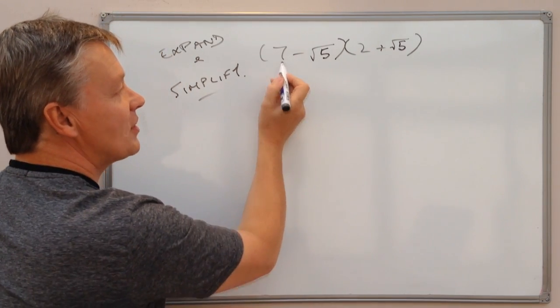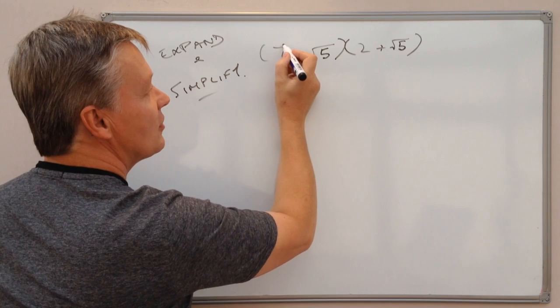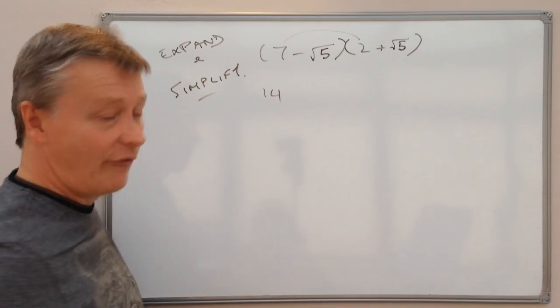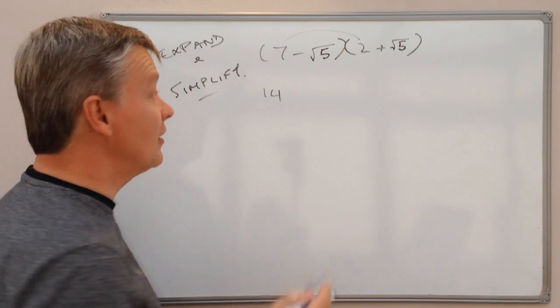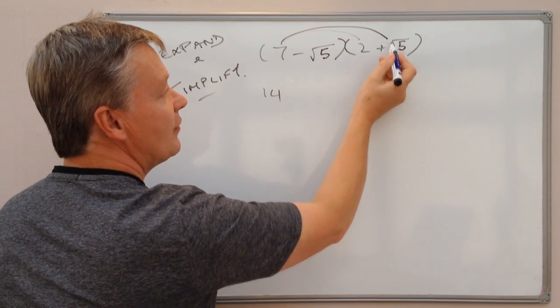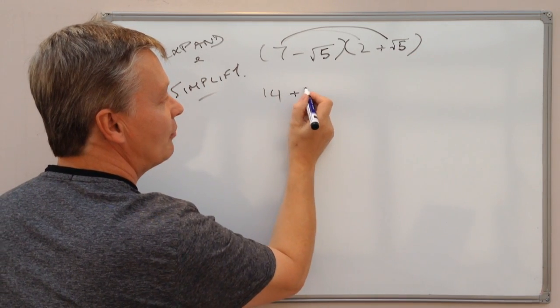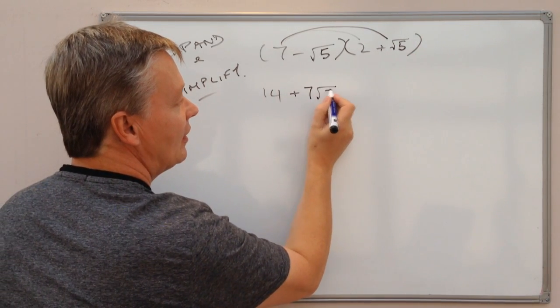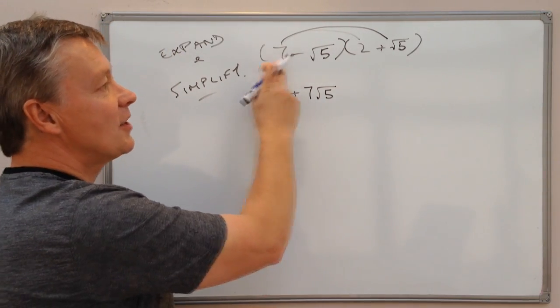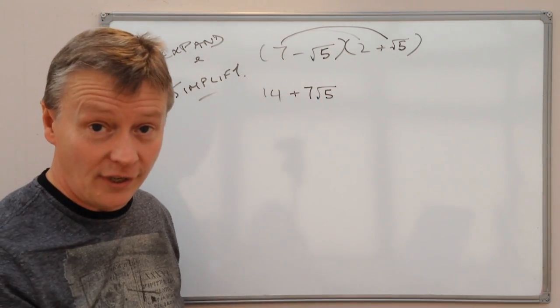So I'm going to multiply this term by these two, so the first thing I do is 7 times 2 which is 14. The next thing I do is I multiply that 7 by positive root 5, so that's going to give me positive 7 times root 5.